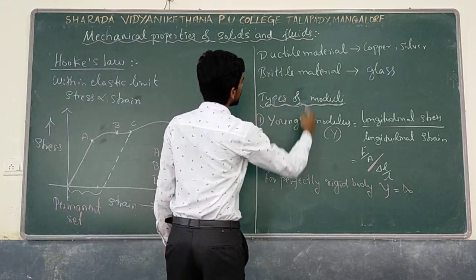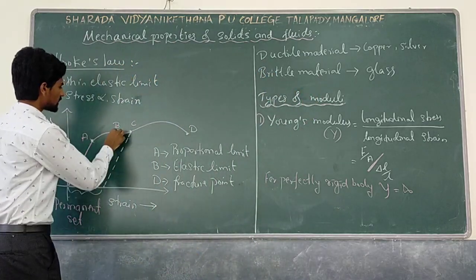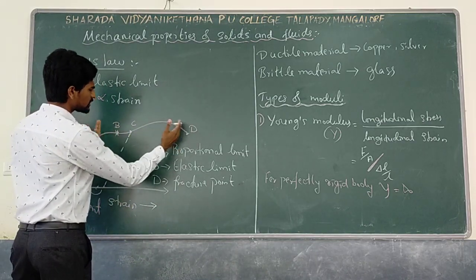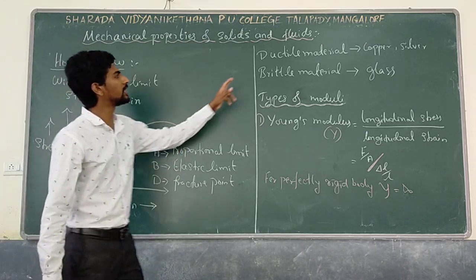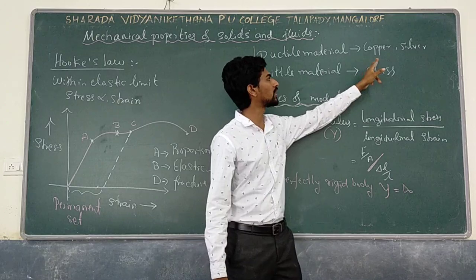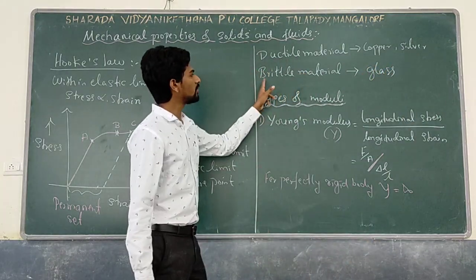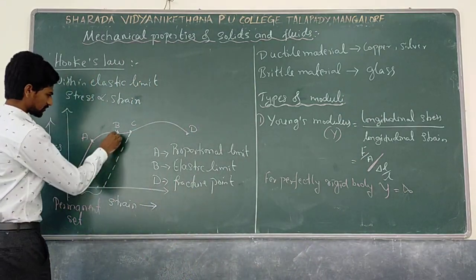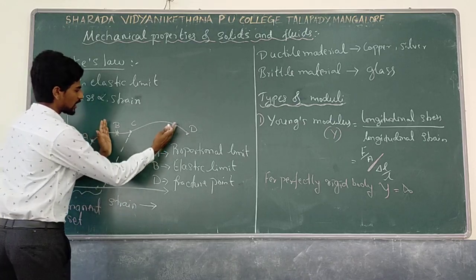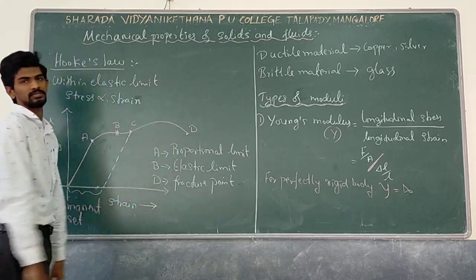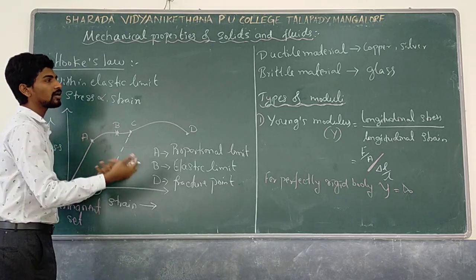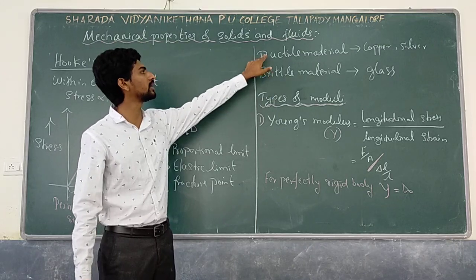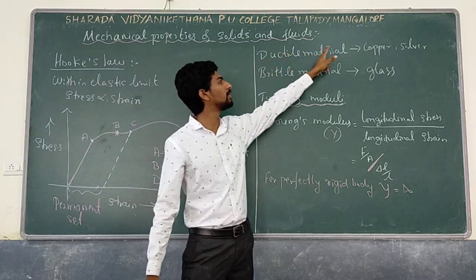Next: ductile material and brittle material. For ductile material, the distance from the elastic limit to the fracture point is very large. Copper and silver are examples of ductile materials. For brittle material, such as glass, the gap between the elastic limit and the fracture point is very small — it breaks almost immediately after the elastic limit. Only ductile material can be used for making springs, not brittle material.